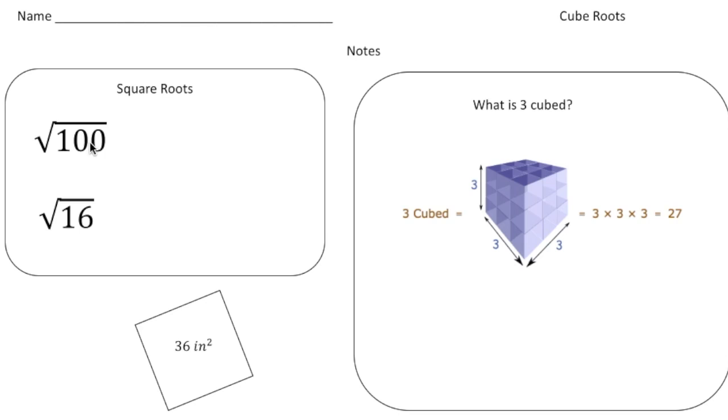We have the square root of 100, and we know the square root of 100 is going to be 10 or negative 10, because 10 times 10 gives us 100, but also negative 10 times negative 10 gives us 100. The square root of 16 is going to be either positive 4 or negative 4, because 4 times 4 is 16, or negative 4 times negative 4 is also 16.